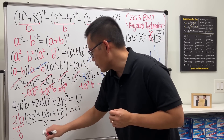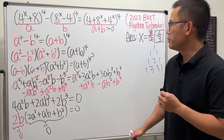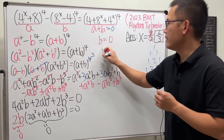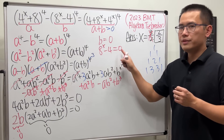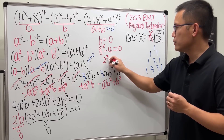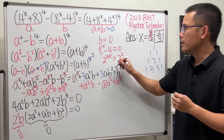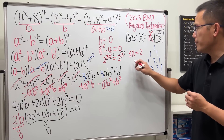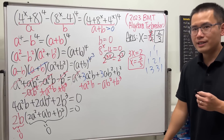When 2b equals zero, b equals zero. And b equals zero means 8^x minus 4 equals zero. Moving terms over: 2 to the 3x equals 4, which is 2 squared. So 3x equals 2, giving x equals two-thirds.